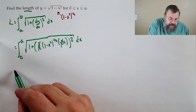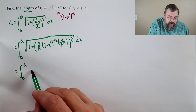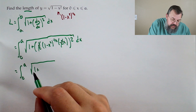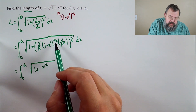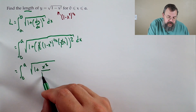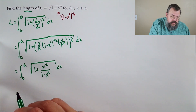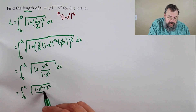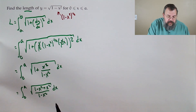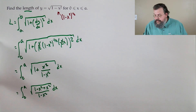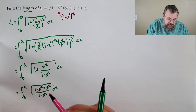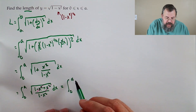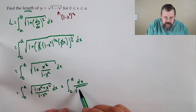Squaring the derivative: the minus goes away, leaving x squared over (1 minus x squared). We get the square root of 1 plus x squared over (1 minus x squared). Combining with a common denominator: (1 minus x squared plus x squared) over (1 minus x squared). The minus x squared and plus x squared cancel, leaving 1 over (1 minus x squared) under the square root. So the integral becomes: from 0 to a of dx over the square root of 1 minus x squared.